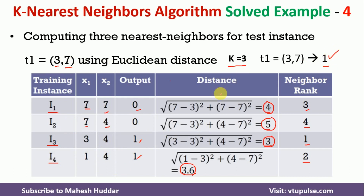This is the simple process to classify a new instance into one of the classes. However, we haven't considered the actual value of the distance. If the distance is very small, it should be given maximum weightage. For that reason, we calculate the inverse square distance, which is considered as a weight — this is called the distance-weighted nearest neighbor algorithm.